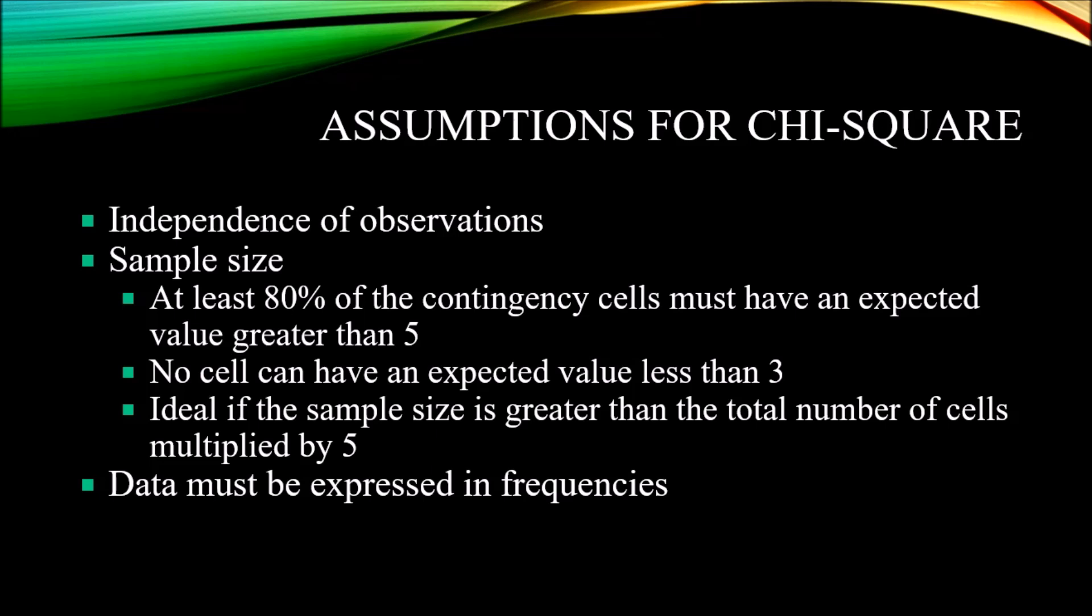The last assumption for chi-square is that the data must be expressed in frequencies or counts. In the example with the semesters and the pass-fail, each of those values in each of those cells is a count—the number of students for that semester that passed or the number of students that failed. Those are correctly expressed as a count, a frequency, the number of times something occurred.